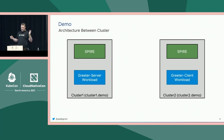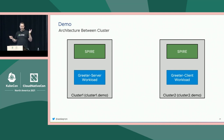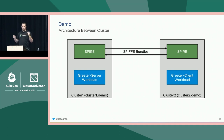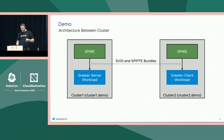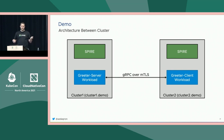Between clusters, on the left we've got cluster one and on the right cluster two, with all that SPIRE infrastructure lumped into one box named SPIRE on each side. We have a greeter server running in cluster one and a greeter client running in cluster two. The SPIRE servers are going to be programmed using the ClusterFederatedTrustDomain CRD to federate with each other, pulling SPIFFE bundle material into each other's trust domains. The workloads will connect through the Workload API to obtain their SVIDs and SPIFFE bundles, then talk to each other over mTLS and do mutual authentication.